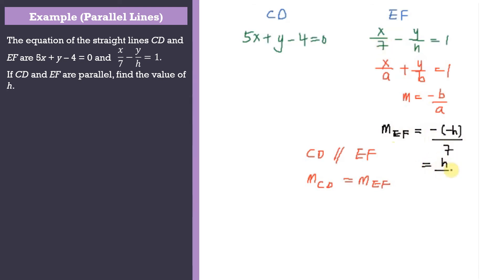To find the gradient for CD, you have to change to the gradient intercept form, that is y = mx + c. So y equals, bring over 5x to get negative 5x, bring over negative 4 to get positive 4. This is in the form y = mx + c, therefore the gradient for CD equals negative 5.